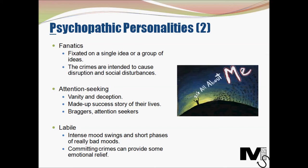The next type is labile. This type of psychopath experiences intense mood swings which are a lot more severe than the depressive type. They can get into short phases of really bad moods and come out of them quite quickly — their moods are quite like storms, blowing away in no time. They do have the tendency to commit crimes which ultimately tend to provide them some level of emotional relief.